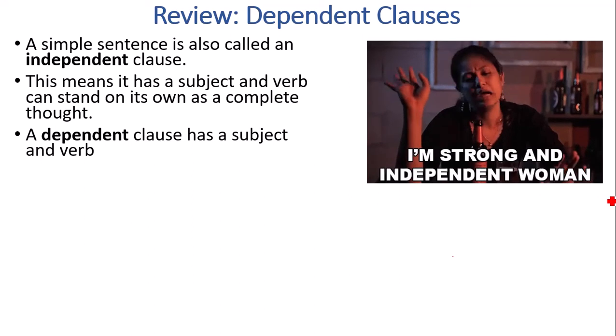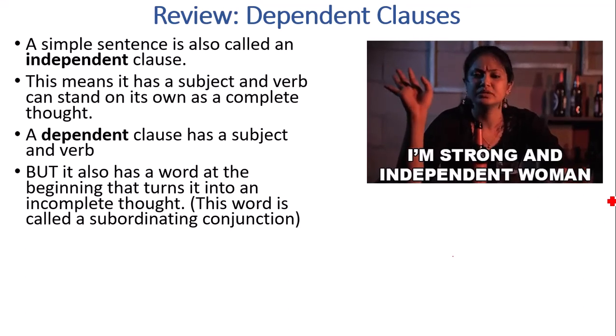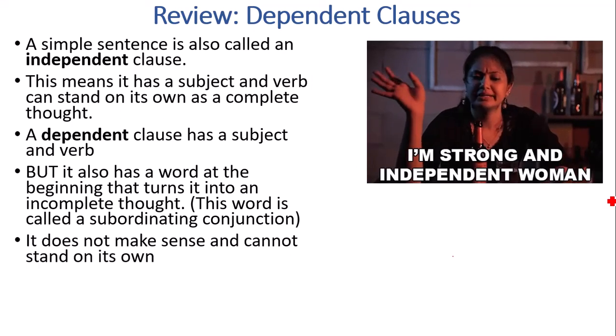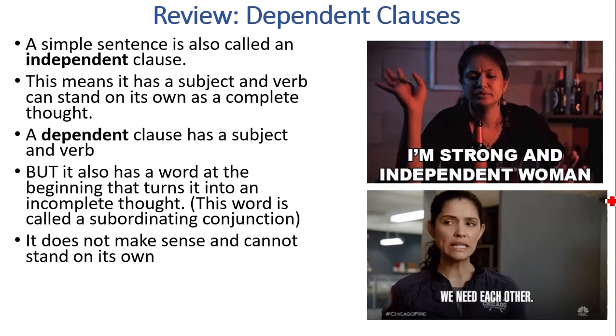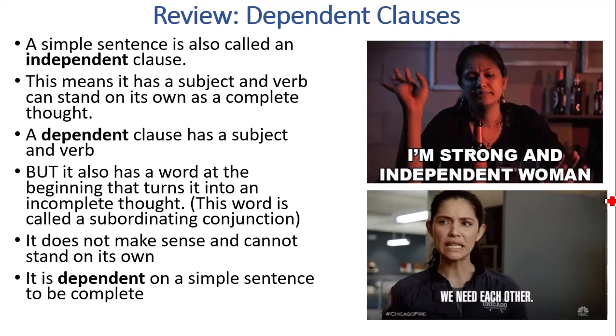In contrast, a dependent clause has a subject and a verb. But it also has a word in the beginning that turns it into an incomplete thought. And this word is called a subordinating conjunction. The word subordinating came from this Latin word subordinate. It means somebody underneath you. And conjunction, con means with and junked means join. So this is a word that puts the dependent clause underneath so to speak an independent clause. It doesn't make sense and it can't stand on its own. Dependent clause is dependent on a simple sentence to be a complete thought.